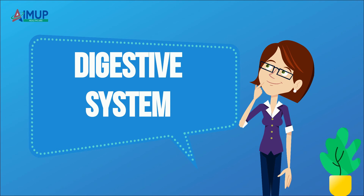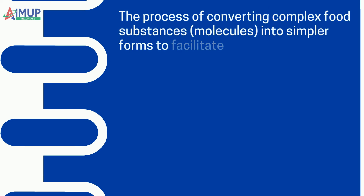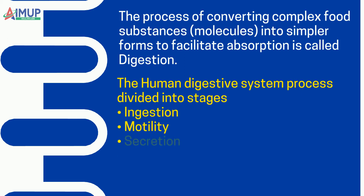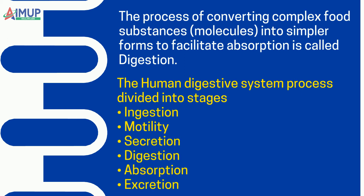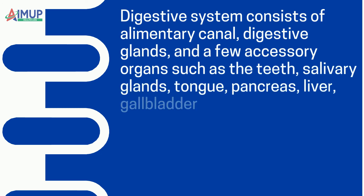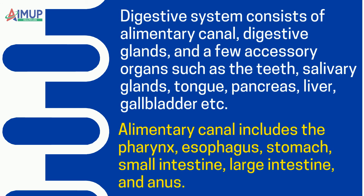The digestive system converts complex food substances into simpler forms to facilitate absorption — a process called digestion. The human digestive system is divided into stages: ingestion, motility, secretion, digestion, absorption, and excretion. The digestive system consists of the alimentary canal, digestive glands, and accessory organs such as the teeth, salivary glands, tongue, pancreas, liver, and gallbladder. The alimentary canal includes the pharynx, esophagus, stomach, small intestine, large intestine, and anus.